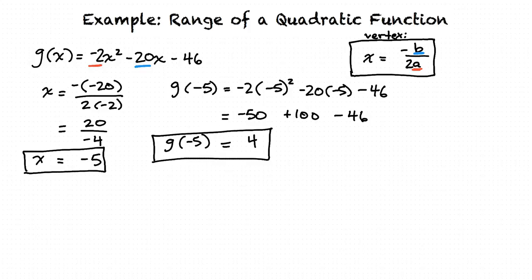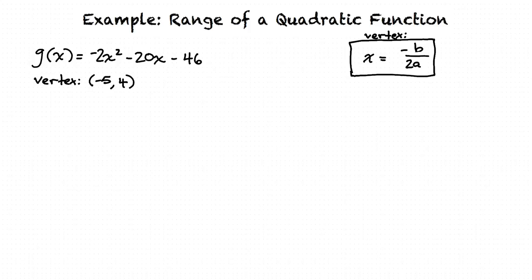Now we know that the vertex of the parabola is at negative 5 comma 4. Because the function has a negative leading coefficient, the parabola has a maximum at the vertex, and it opens downwards from there.